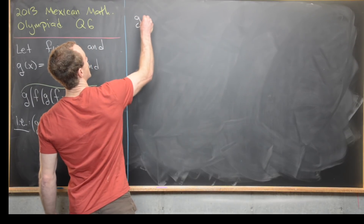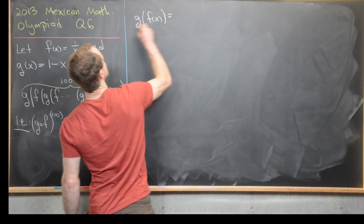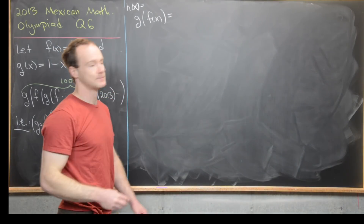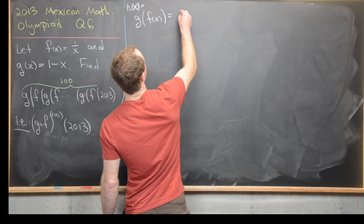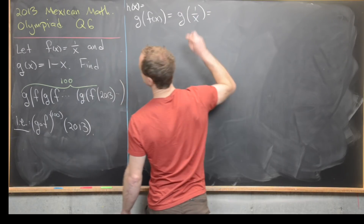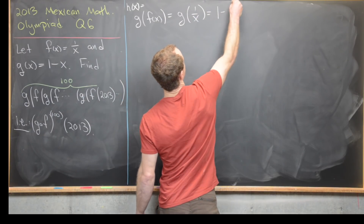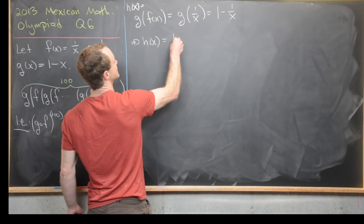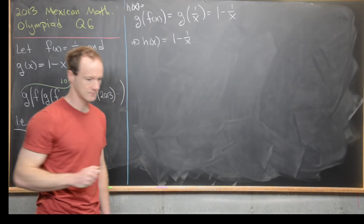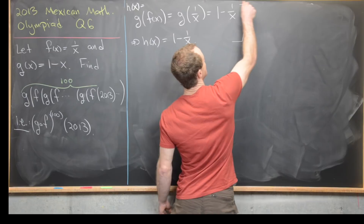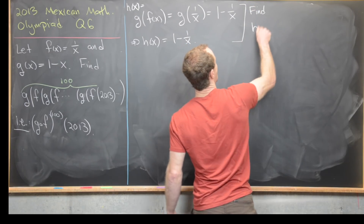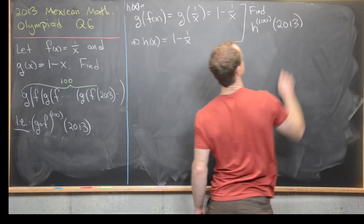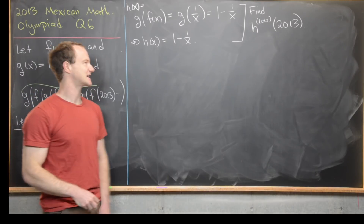Let's go ahead and compute g composed with f of x, and set that equal to h(x). We get g composed with 1/x, which gives 1 - 1/x. So our new function is h(x) = 1 - 1/x. We can now rephrase the question: find h composed with itself 100 times, evaluated at 2013.